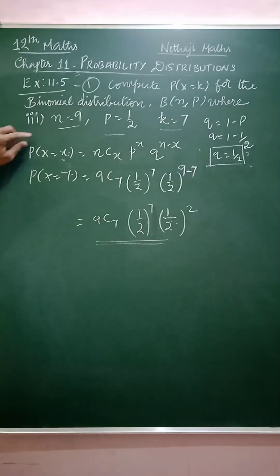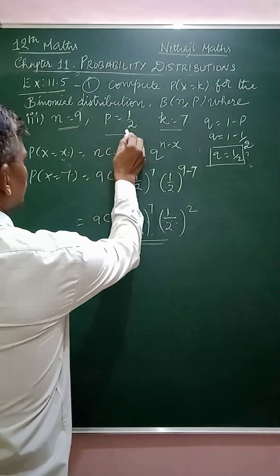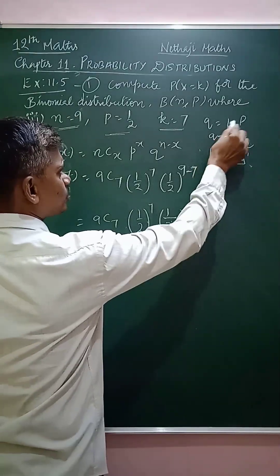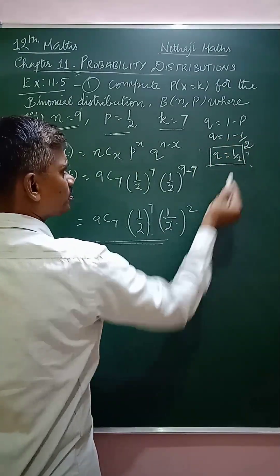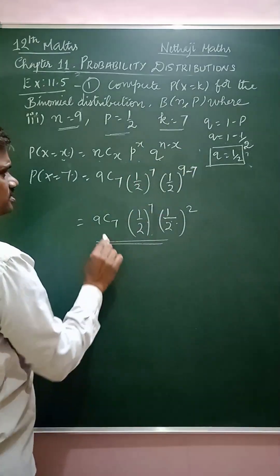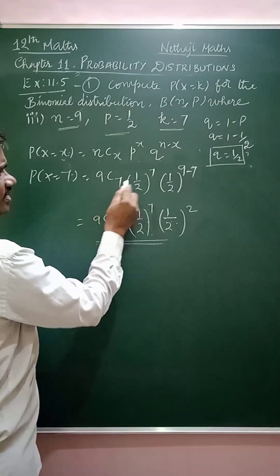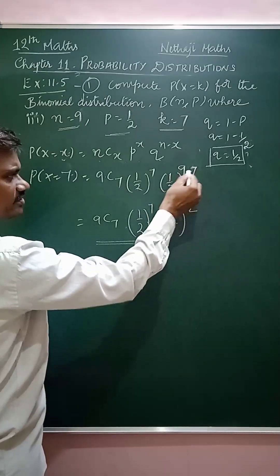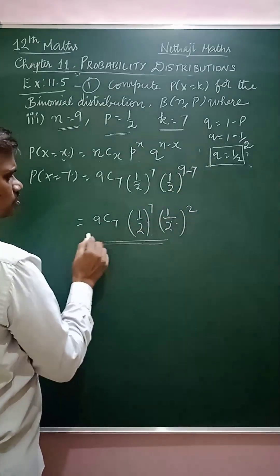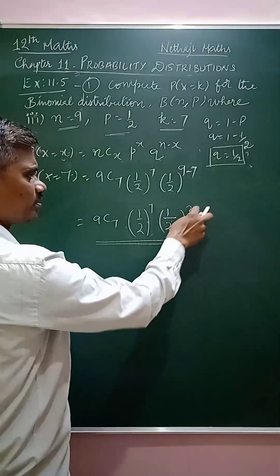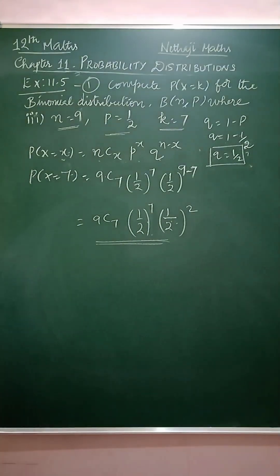In the third problem, n equals 9, p equals 1/2, and k equals 7. Find q: 1 minus 1/2 gives 1/2. Apply the formula: 9C7 times (1/2)^7 times (1/2)^(9-7). This gives 9C7 times (1/2)^7 times (1/2)^2. That's all, thank you.